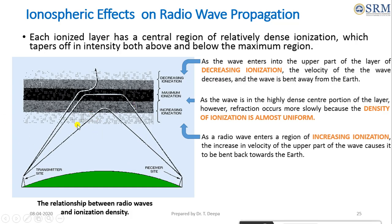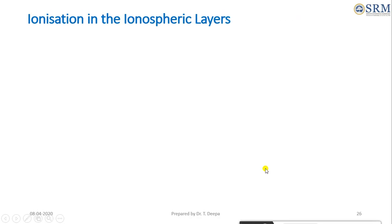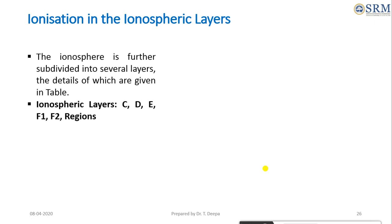As the radio wave enters the increasing ionization region, the upper part of the wave is bent towards the earth because of the ionization. The electrons and ions are not distributed evenly in the ionosphere, so the ionosphere is divided into different layers.